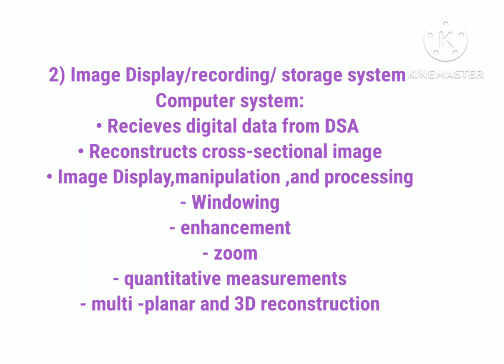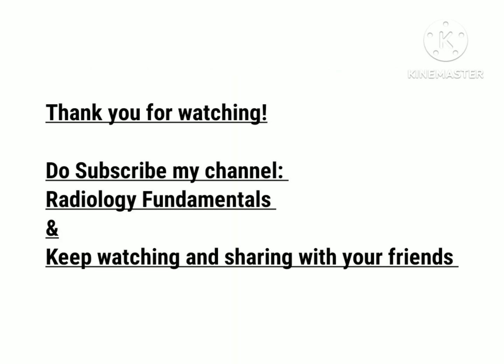Now let's talk about the second major system in CT scanner: the image display, recording and storage system, which is located in the operator's area. The computer receives digital data from DAS and those digital data are reconstructed into cross-sectional images, which are represented on the computer display. These images can be manipulated and processed — windowing can be done, enhancement of the image, zoom, and 3D reconstruction, and much more. This is all about today's topic: components of computer tomography. Thank you for watching, take care.